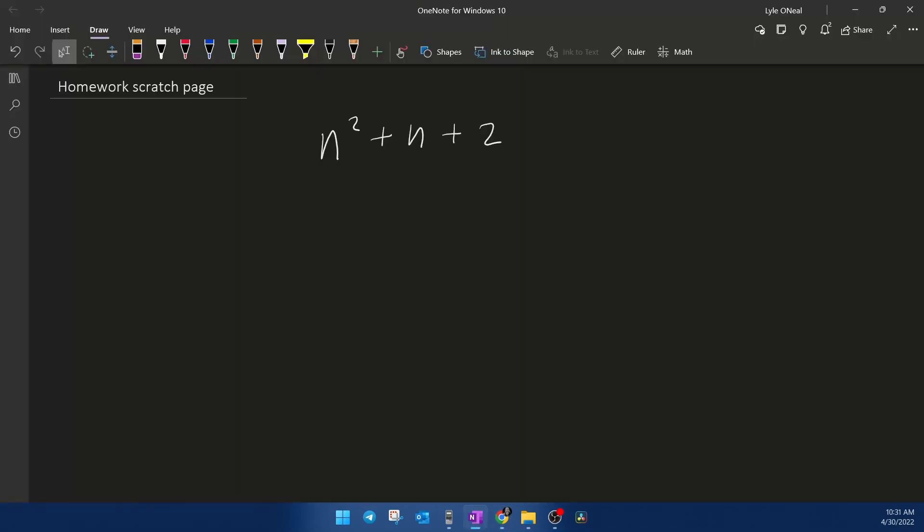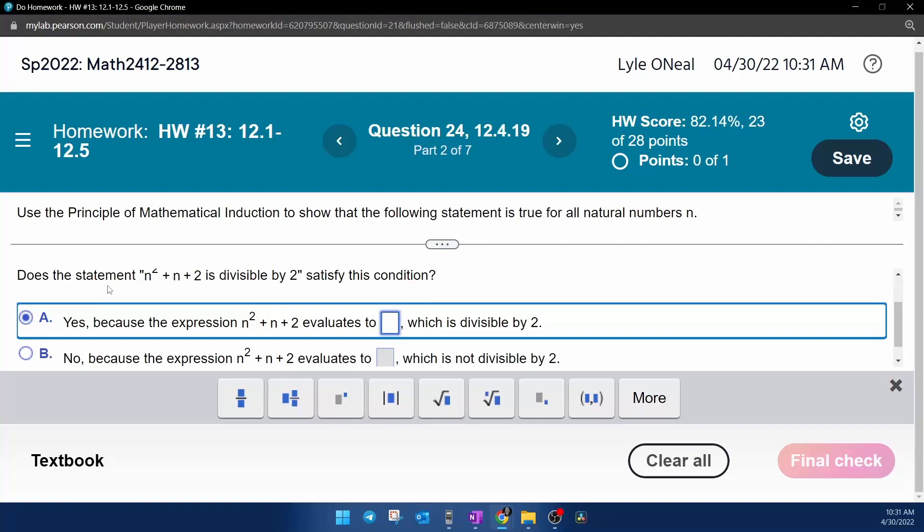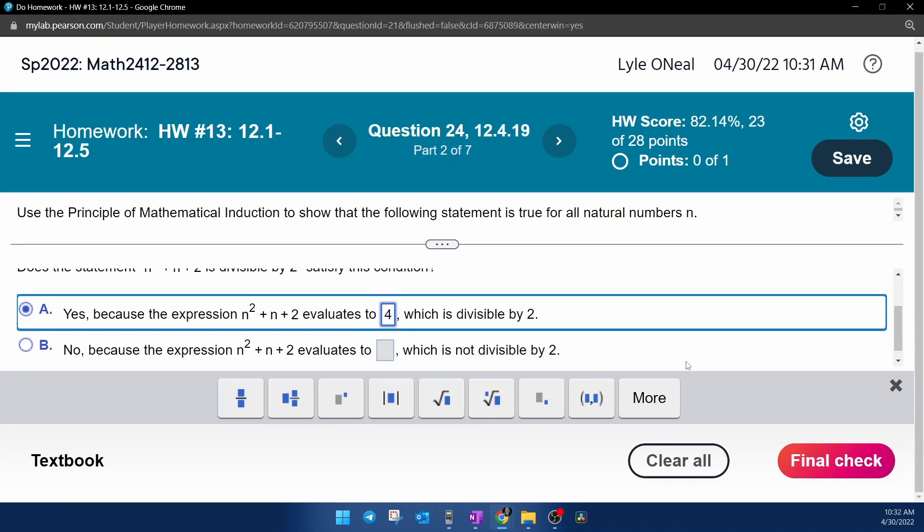So let's go to the scratch work and show that. So mathematically showing that the statement is true for when k is 1, we simply replace all of the n's with 1 and work it out. 1 plus 1 plus 2 is 4. That is definitely divisible by 2. So we have shown that the statement is true. So back to our MyLabMath, we're going to select option A because we proved that it is true. It says the expression evaluates to 4, which is divisible by 2.